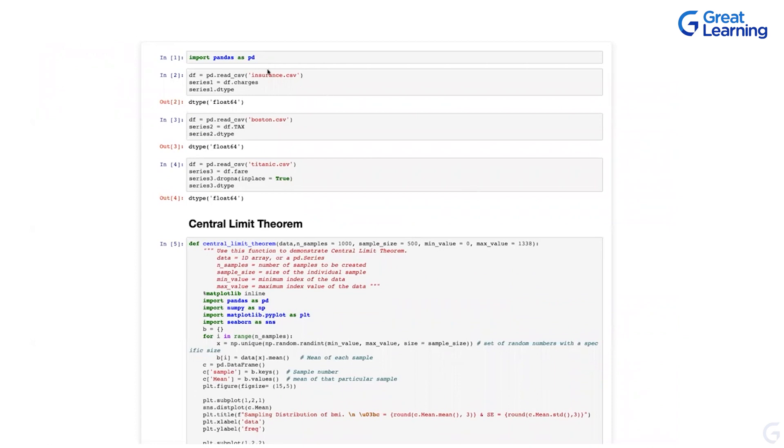So basically, what we are trying to do is importing pandas, simple straightaway. Then there is a file called insurance data file. You'll get access to these files once the session gets over. Then another file called Boston. It's a city prices and everything, taxes, different features. Then there is another file called Titanic. Each of these files have one variable. Each variable are multiple variables. I didn't even check the files. But there is a variable called charges in insurance. And there is a variable called tax in Boston. And there is a variable called fare in Titanic. We are interested in only these specific variables in each of those data sets. We could have taken any data. So we randomly picked three files.